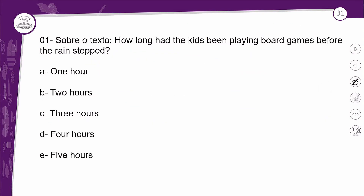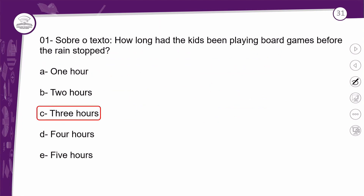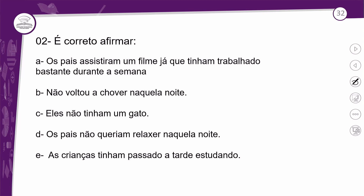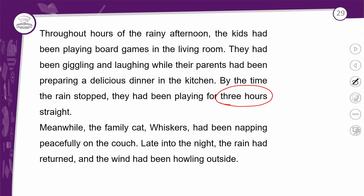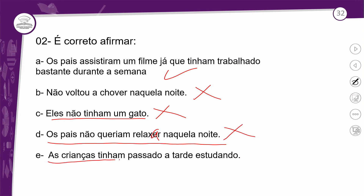Na número 1, a gente já sabe a resposta — vimos que eles estavam brincando por 3 horas quando a chuva parou. A resposta é 3 hours. Na número 2: é correto afirmar que os pais assistiram um filme já que tinham trabalhado bastante durante a semana? Sim. Não voltou a chover naquela noite? Mentira, voltou sim. Eles não tinham gato? Tinham sim, o Whiskers. Os pais não queriam relaxar naquela noite? Claro que queriam. As crianças tinham passado a tarde estudando? Não, elas tinham passado a tarde jogando jogos de tabuleiro. Portanto a resposta é a letra A.